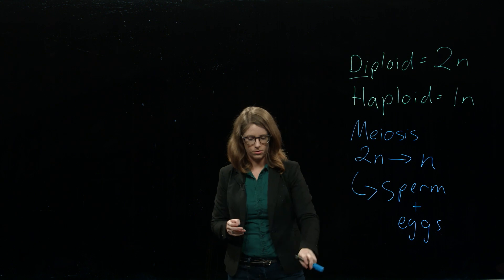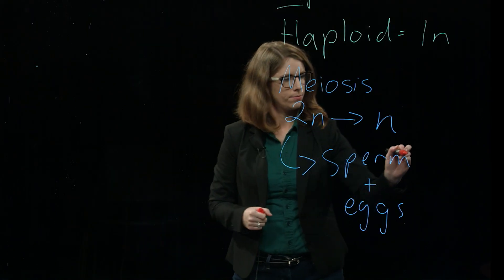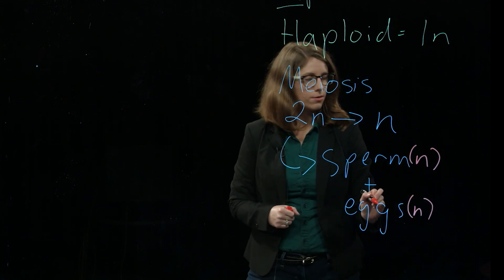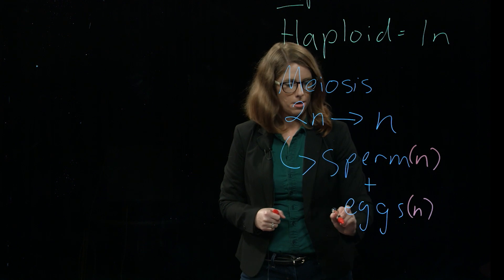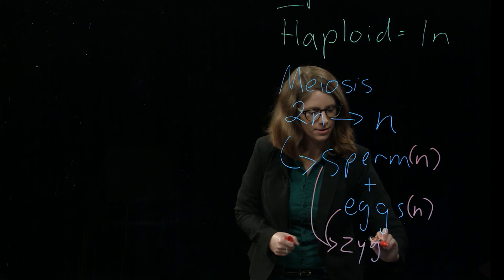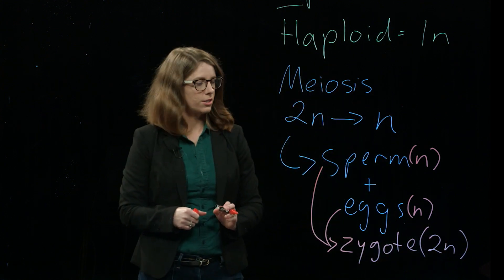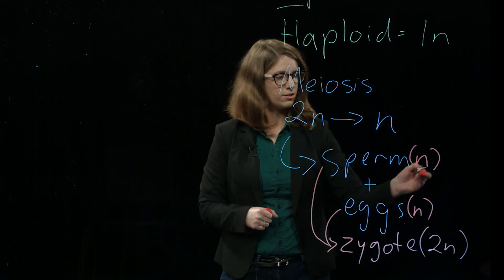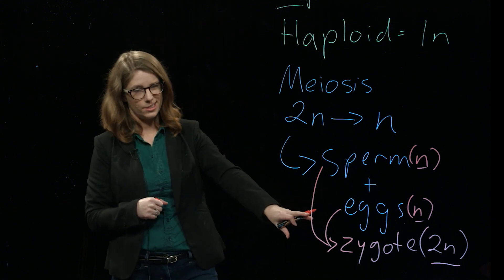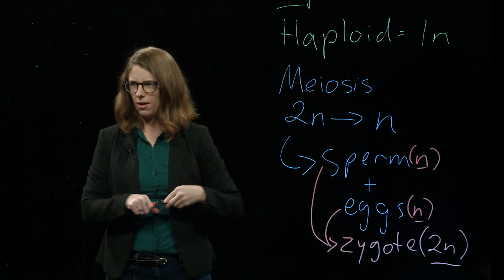Because what's going to happen and what we're going to see when we do these crosses is a sperm and an egg are going to fuse. The sperm, which is haploid, and the egg, which is haploid, when they fuse together in fertilization, they make the offspring of the next generation, which is now diploid, because you're combining two halves to make a whole. Two halves make a whole. This is a process that's called fertilization. Combining egg and sperm makes fertilization.